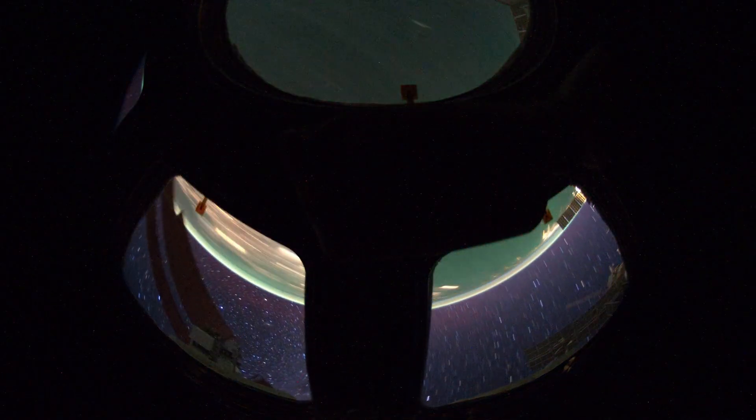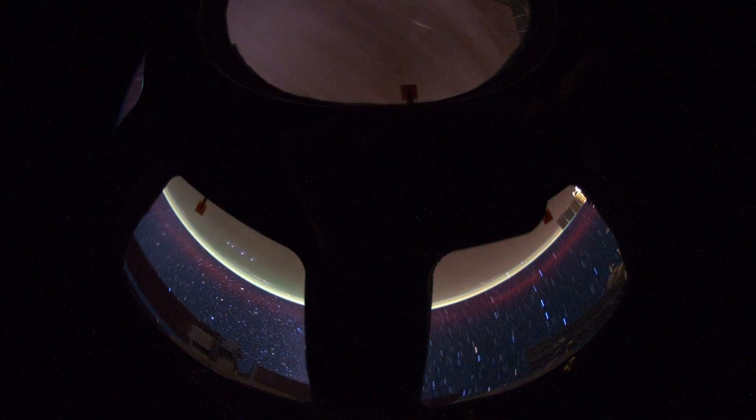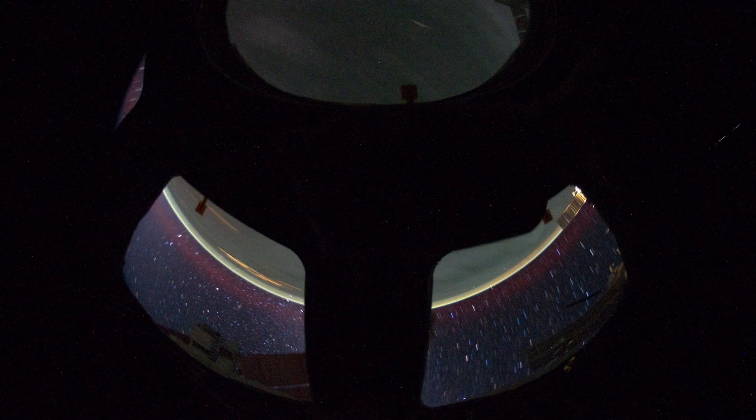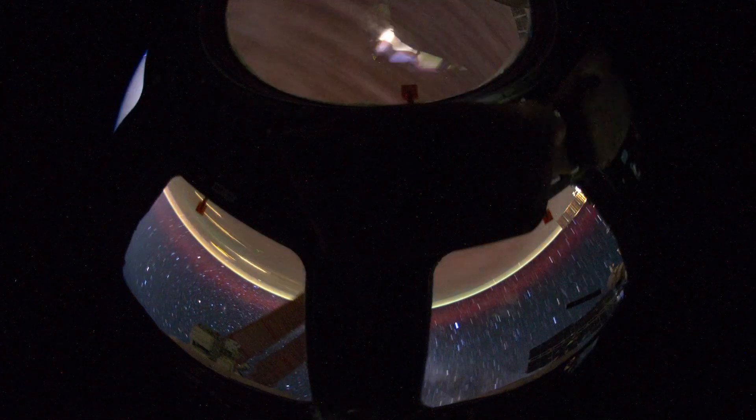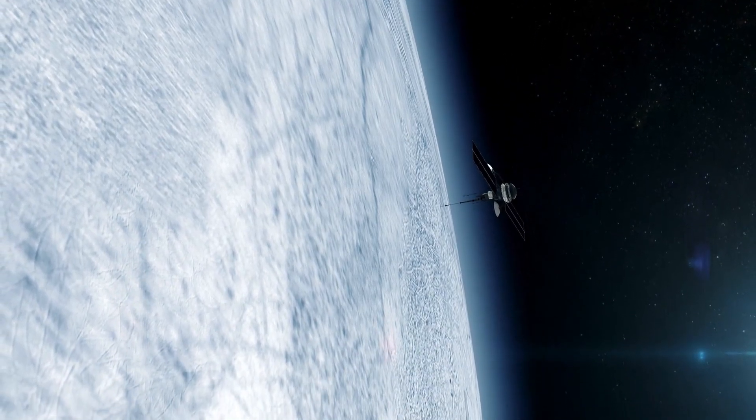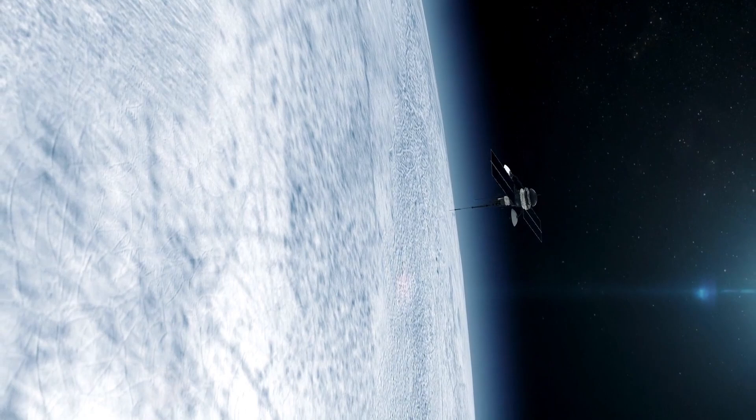For decades we've gazed into space and assumed one thing, that the edge of our solar system was nothing but emptiness, a cold, quiet boundary where the sun's influence fades into the background hum of the galaxy.